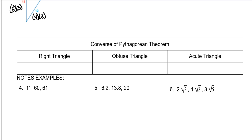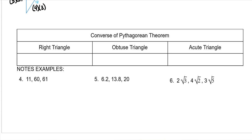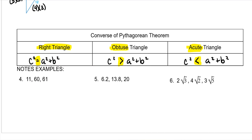Then we have the converse of Pythagorean Theorem — ways to tell if you have a right triangle, an obtuse triangle, or an acute triangle. For a right triangle, c squared equals a squared plus b squared. For an obtuse triangle, c squared is greater than a squared plus b squared. For an acute triangle, c squared is less than a squared plus b squared. C squared needs to be on the left, and remember that c is always your hypotenuse — your biggest number, your longest side.